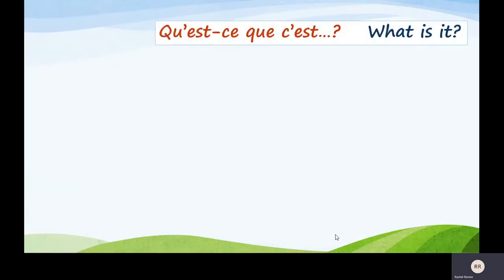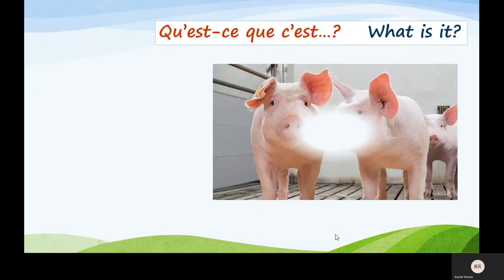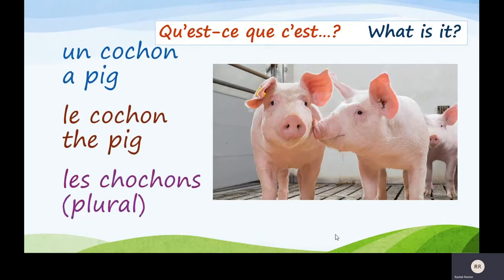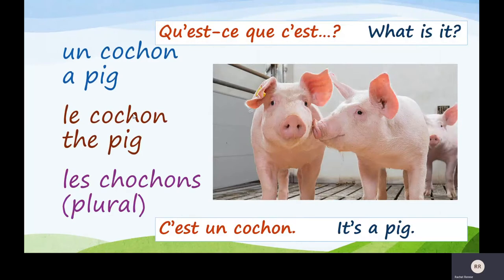What've we got next? Qu'est-ce que c'est? What is it? Look at the cute little piggies! Un cochon — a pig. Le cochon — the pig. Les cochons — plural. Répétez: un cochon, le cochon, les cochons. Remember, we're used to C and H making a 'ch' sound, but in French they make a 'sh' sound, so it's cochon. Qu'est-ce que c'est? C'est un cochon. It's a pig.